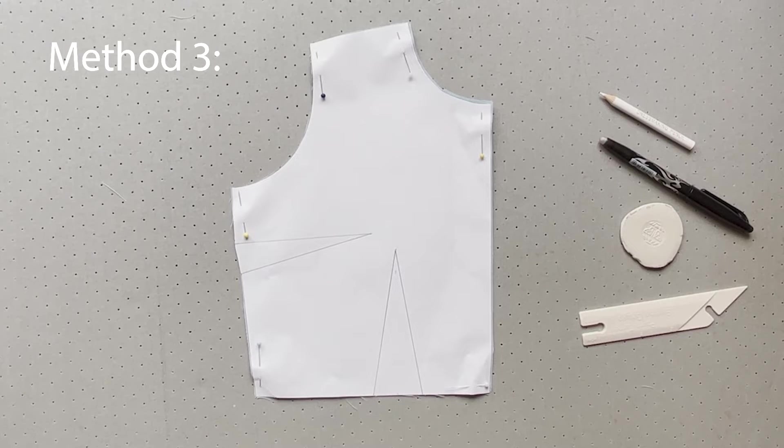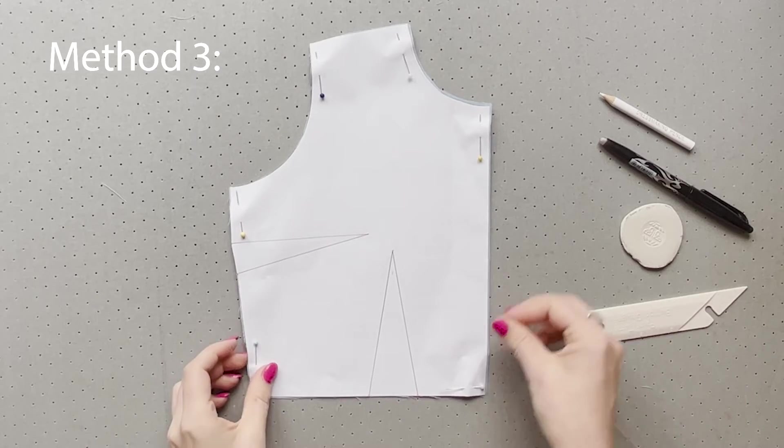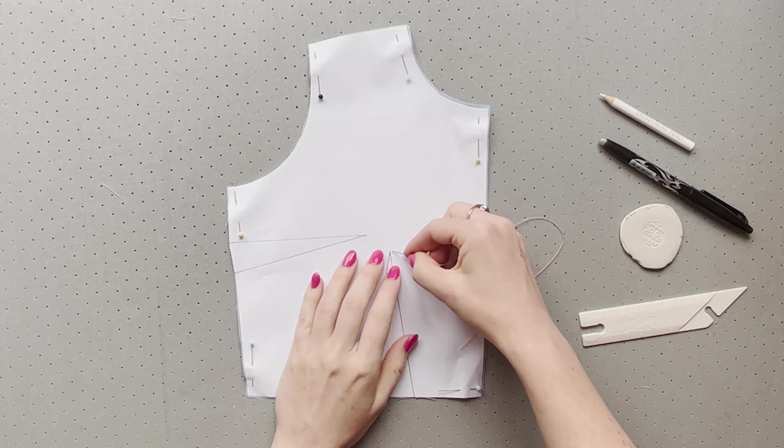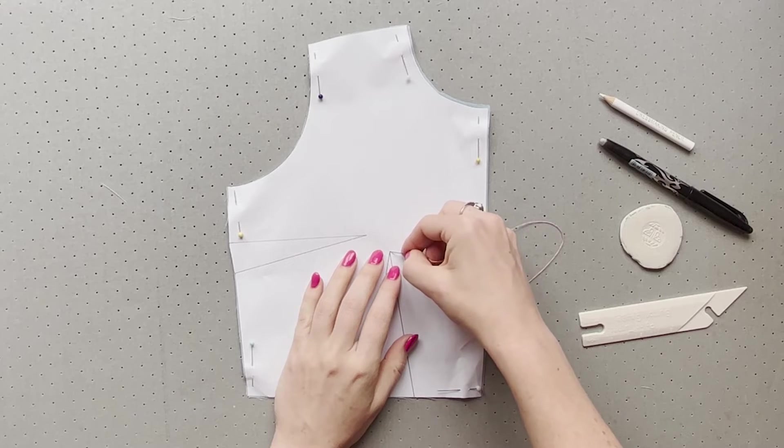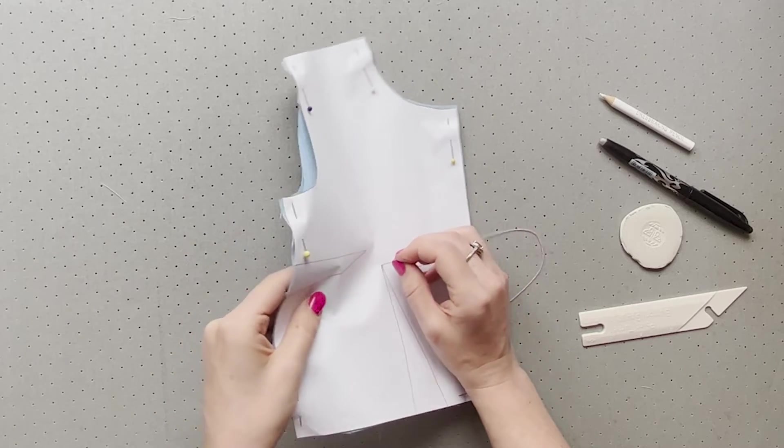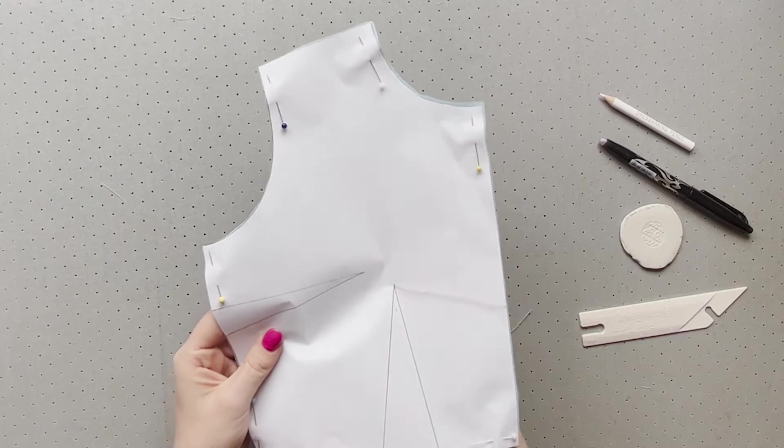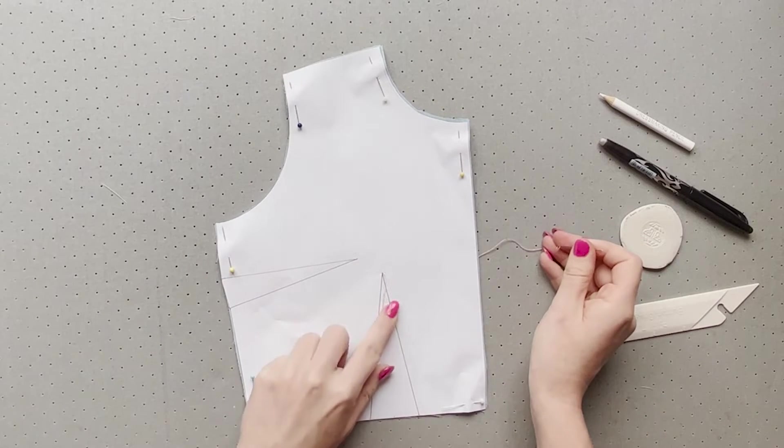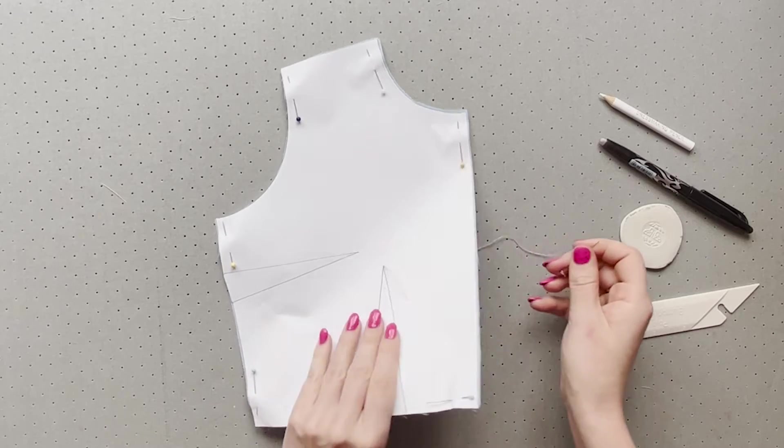For method three, the first steps are the same. Leave your fabric pinned to your pattern from cutting and snip your legs. Now take a hand sewing needle and some contrast thread. I like it double length and don't knot it. As we did with the pin, push the needle through the dart point and leave a tail.